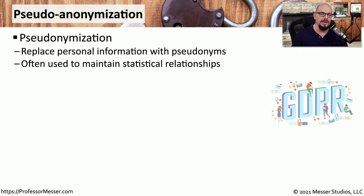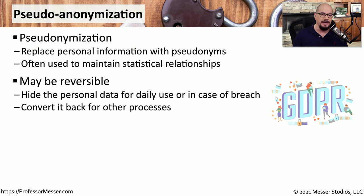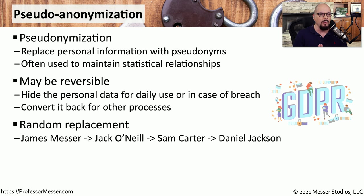If you need data protection but still need to maintain the statistical relationships between the data you're using, then you'll want to use pseudo-anonymization, or pseudonymization. Unlike anonymization, pseudonymization has a way to convert the data back if needed for other processes. This means we might see one thing on our screen, but the original data would still be available in the database. There are many different ways to implement this style of data protection.